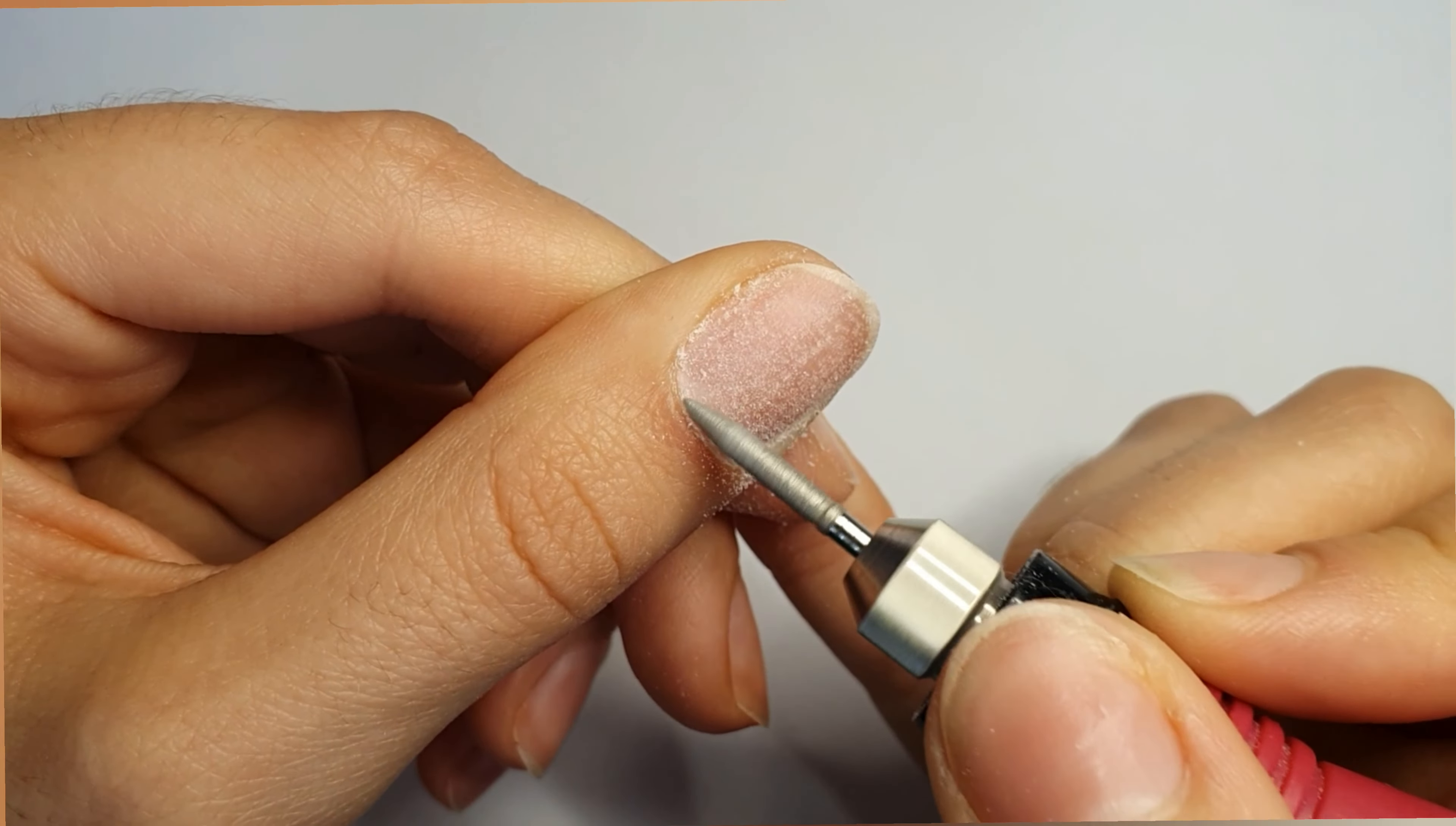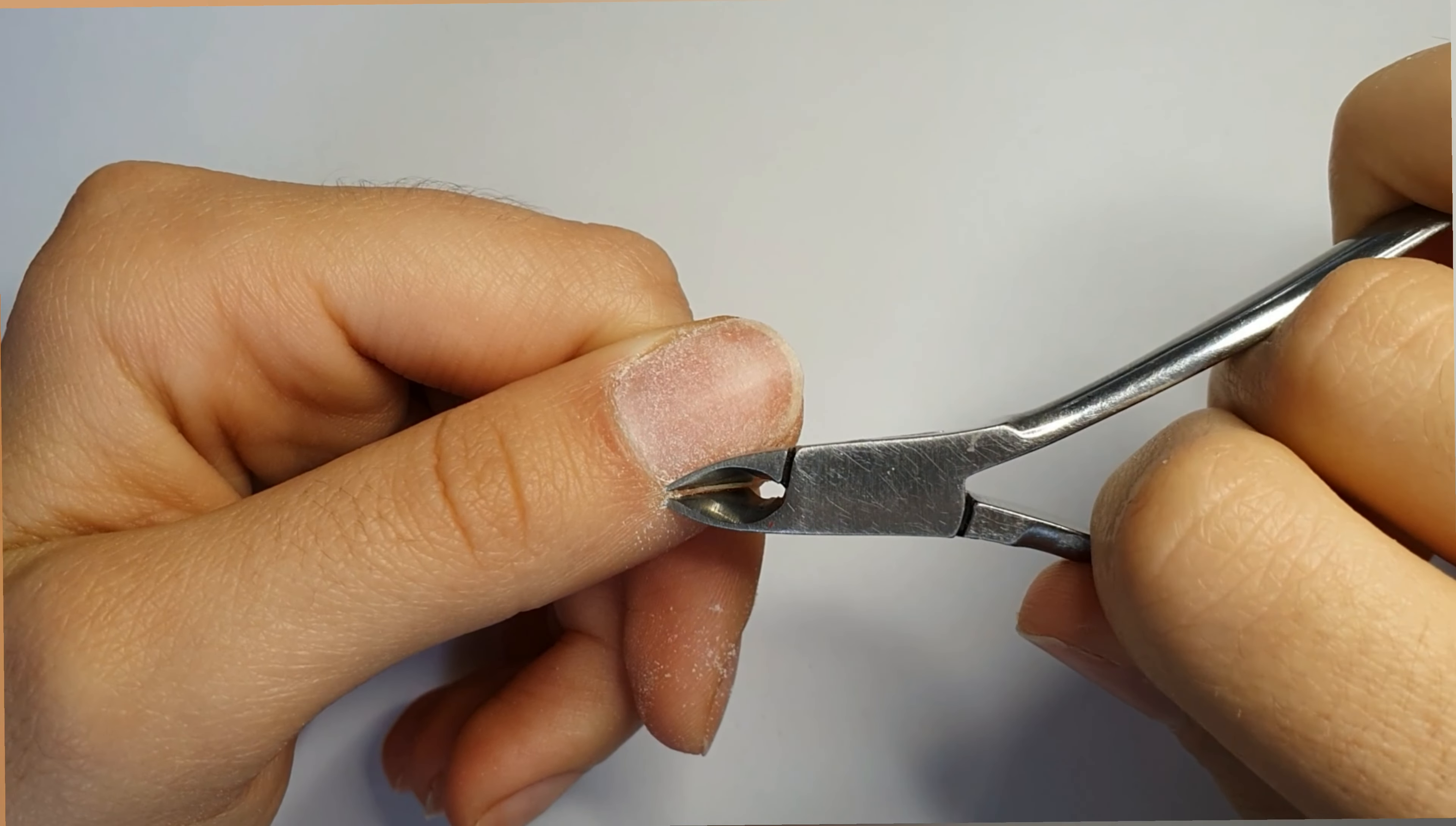It's important to go near the area of the cuticle because it lifts the skin a little bit, making it easier for you to cut the cuticle afterwards.